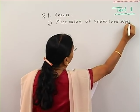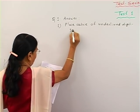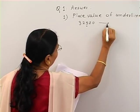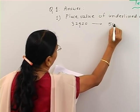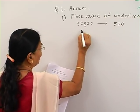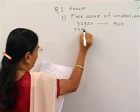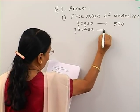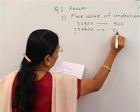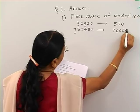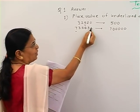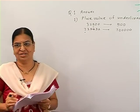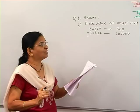Which is the underlined digit in the first number? It is 3,2,5,2,0,5 — and 5 is underlined. So the place value is 500. And in 7,3,5,4,3,2 — 7 is underlined. The place value units, tens, hundreds, thousands, ten thousands, and lakhs — so the place value of 7 is 7 lakhs.